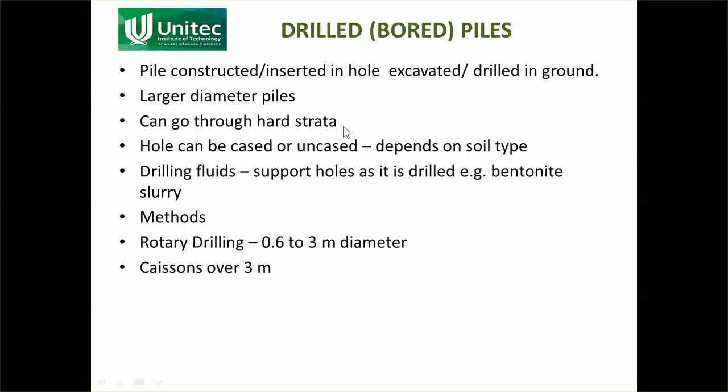Drilled bored piles are the second main type — a replacement pile where you drill a hole and then build the pile inside it, removing the soil from the hole. They are used for large diameter piles, since driven piles can only go up to about 300–400mm before the soil resistance is too great and would shatter the pile. Drilled piles can go through hard strata, which is difficult to drive through but easy to drill. They can be cased or uncased depending on the soil type. A key challenge is keeping the open hole stable while building the pile, which is commonly addressed using drilling fluids such as bentonite slurry.